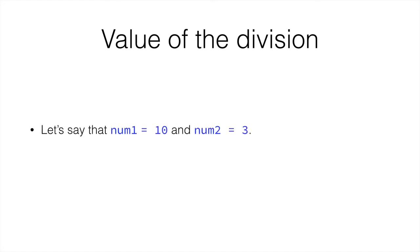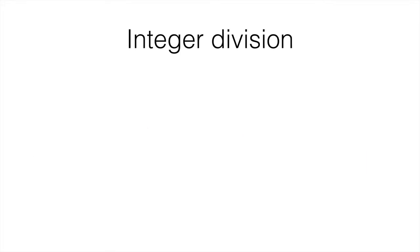So, let's say that num1 is 10 and num2 is 3. If we divide 10 by 3, we get 3.33. Although, not quite, because we've agreed that our four variables are whole numbers. 3.33 is not a whole number.